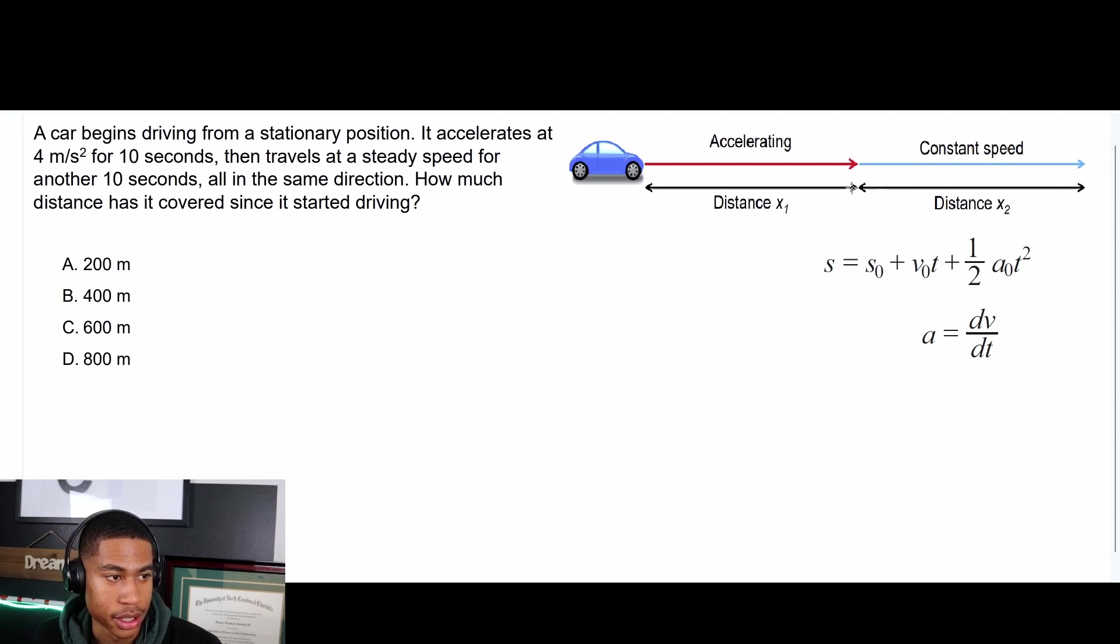I know that'll give me my distance for part of the equation because I know my acceleration, but at a certain point my acceleration equals zero because the car is moving at a constant speed, so there's no change in speed over change in time. So I would still need to know what my velocity is at when it stops accelerating so that I can get the distance of the remaining piece for that other 10 seconds. So I'm going to use a equals dv over dt for that.